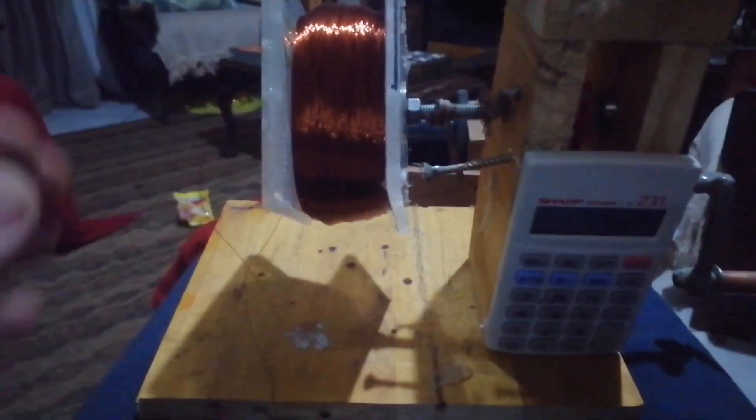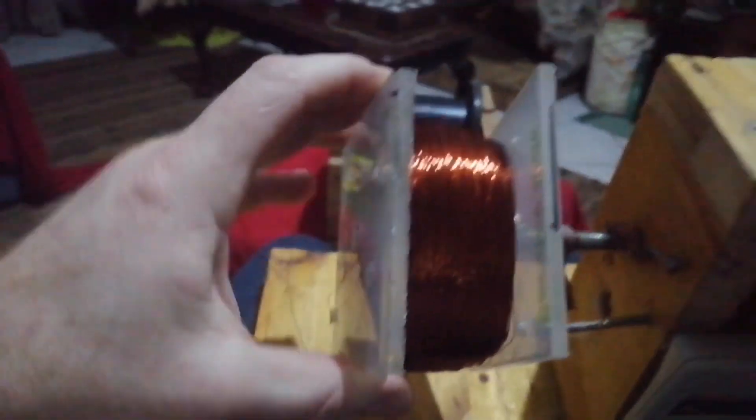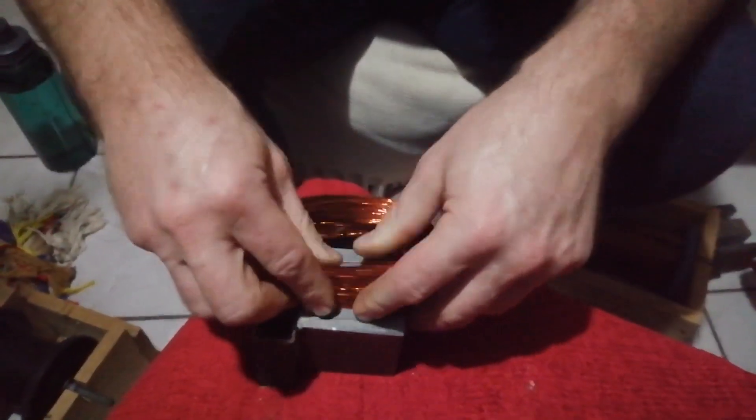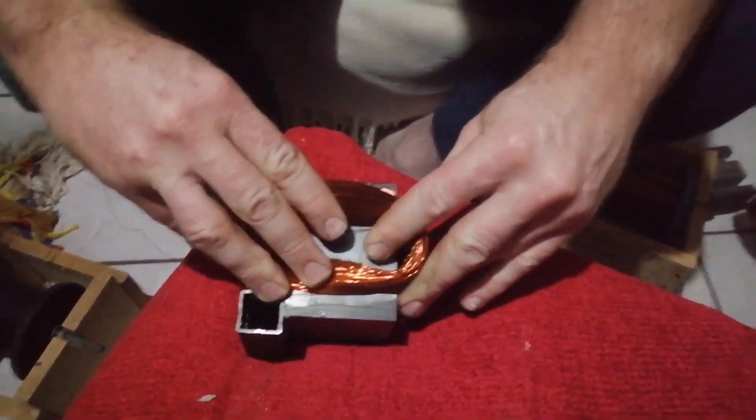I did 2,000 turns on the 0.5 mm, 1,500 turns on the 0.6, and 1,000 turns on the 0.7. But luckily my coil winder's geared, so it didn't take me too long.